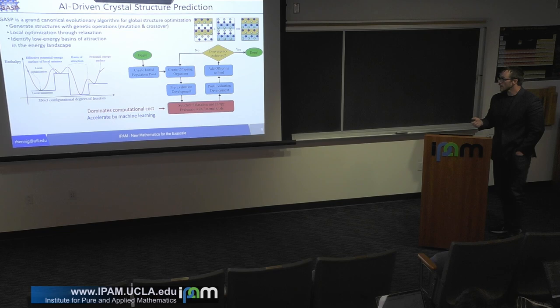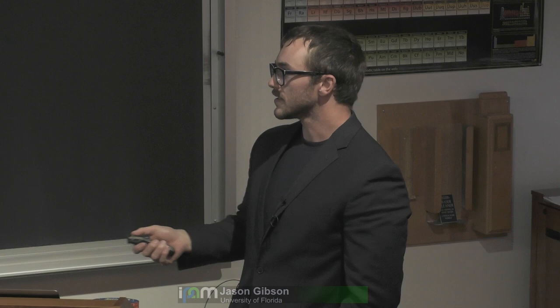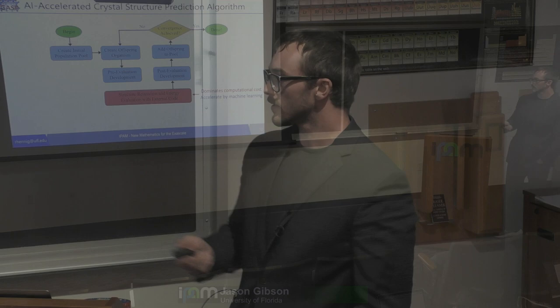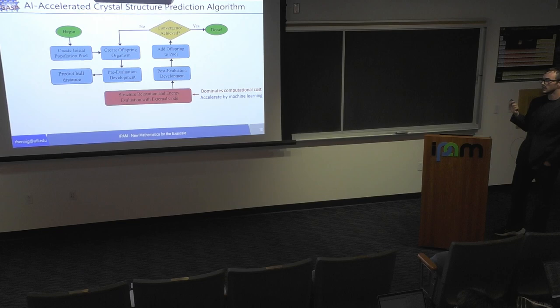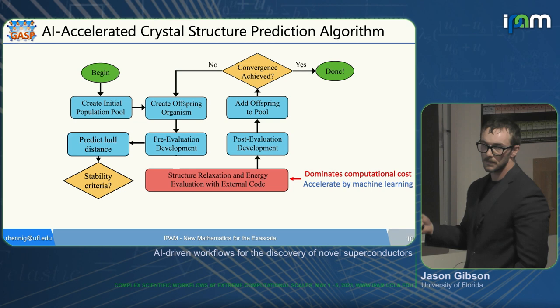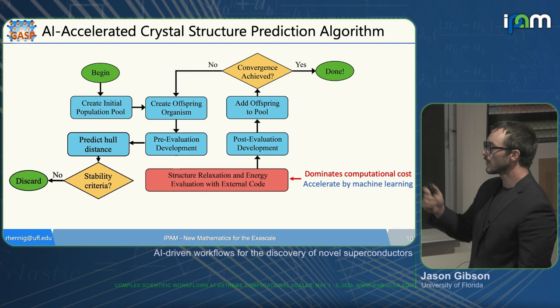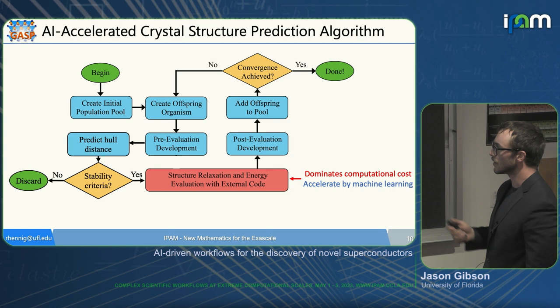What I wanted to do was take this genetic algorithm workflow and add an additional step — removing the direct path from pre-evaluation to structural relaxation and energy evaluation. Instead, I wanted to add a step where we predict the hull distance of a material with a machine learning algorithm. With this predicted hull distance, we check it against predefined stability criteria. If the material does not meet those criteria, we discard it and avoid a redundant DFT calculation.